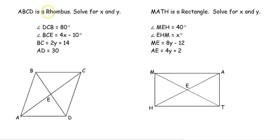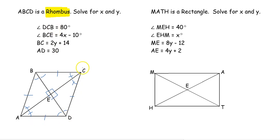When we look at ABCD, we're told it's a rhombus. The rhombus has all five from the parallelogram plus three additional: all four sides are congruent, diagonals are perpendicular, and diagonals are angle bisectors. Angle DCB is 80 degrees — since the diagonal bisects it, each half is 40 degrees. The expression BCE equals 4x minus 10, so our first equation is: 4x minus 10 equals 40 degrees.